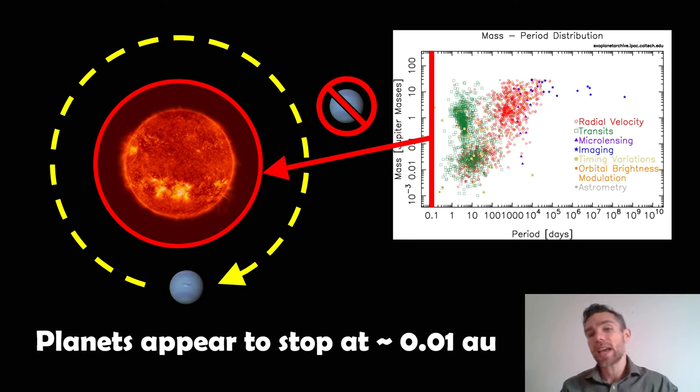This is the exoplanet archive, a plot from that. It's got a catalogue of all the discovered exoplanets so far as well as lots of candidates that haven't been confirmed yet. You can get your own plots, your own data, everything you need to know about exoplanets there. If you plot them, I've got the orbital period of planets against their mass, and this is all of the planets we've detected so far. The different colors represent the different detection techniques.